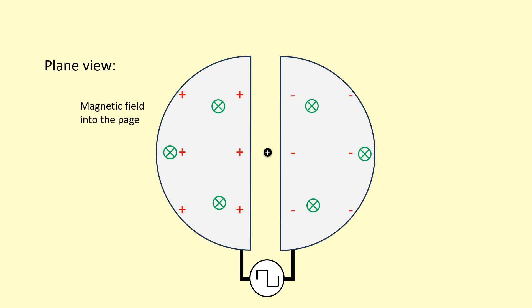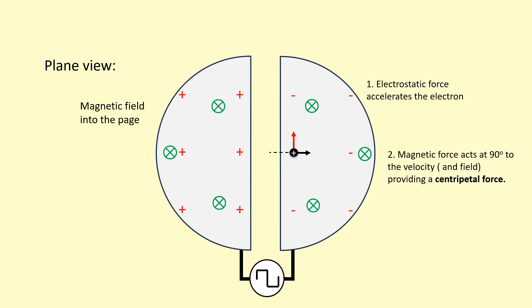We need to get this proton to start moving, so we use the electric field. Because we have a high frequency alternating power supply, it's going to apply a potential difference between the D's. Let's pretend on the right hand side it's a negative plate, so the proton is going to accelerate towards the negative plate and speed up into that D. Now there can be a magnetic force because the charged particle is moving.